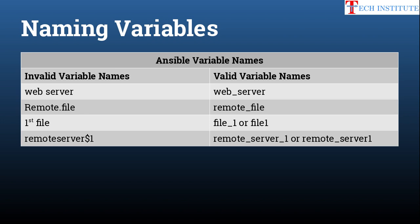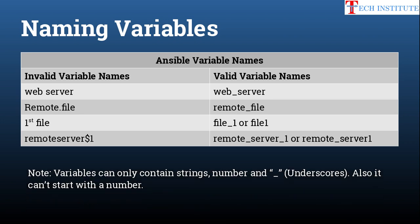Variable names can consist of strings and numbers, but they must always start with a letter — not a number. That is why 'first_file' starting with a number is invalid. For special characters, only underscores are allowed; you cannot use hyphens, dots, commas, or any other special characters in variable names.